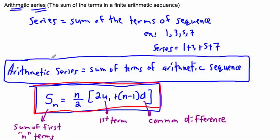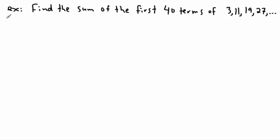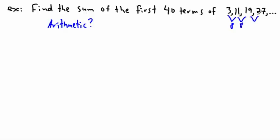So let's do an example. We want to find the sum of the first 40 terms of the sequence. This is just a list of numbers separated by a comma. Since this is a section called arithmetic series, it probably is arithmetic — but let's check. The difference between 3 and 11 is 8. The difference between 11 and 19 is 8. And 27 minus 19 is also 8. Because there's a common difference, it is arithmetic.